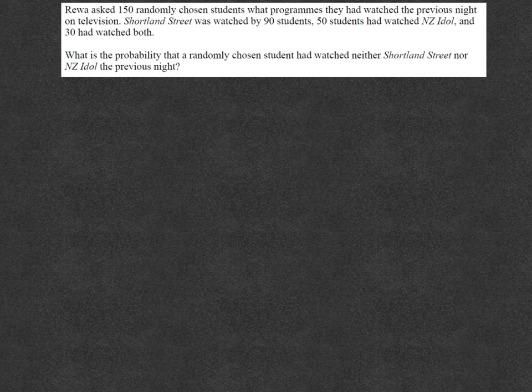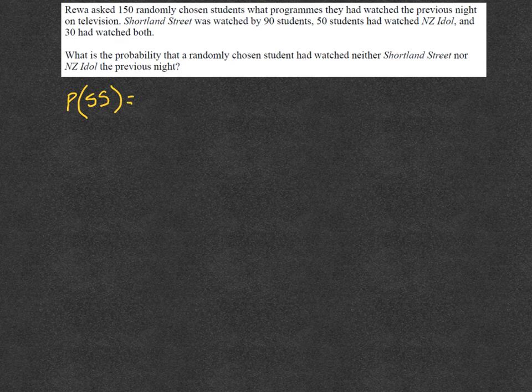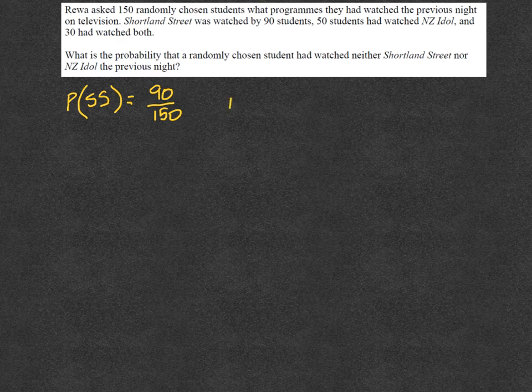So the probability that a student watched Shortland Street is equal to 90 of them and there's 150 students in total, and the probability that somebody watched New Zealand Idol is equal to 50 over 150.